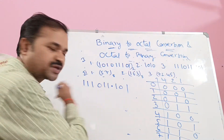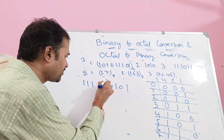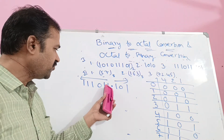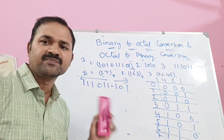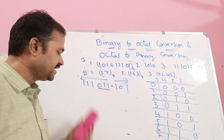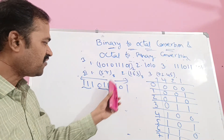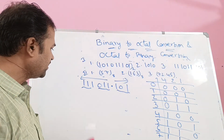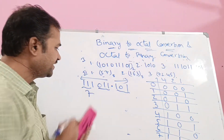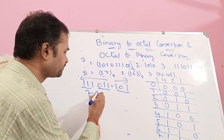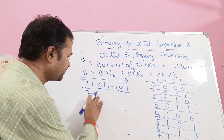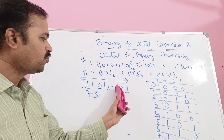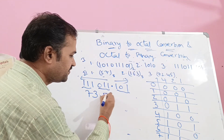For a binary number with a decimal point: before the dot, group the bits from right to left; after the dot, group the bits from left to right. For example, before the dot 011 is one group and 011 is another group. After the dot, 101 is one group. In octal notation: 011 is 3, 011 is 3, and 101 is 5. So the result is 73.5 base 8 — this is the corresponding octal number for that binary number.